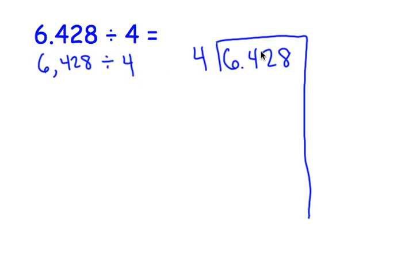So let's take out 1,000 groups of 4. 1,000 times 4 is 4,000. And subtract. That leaves us with 2,428.